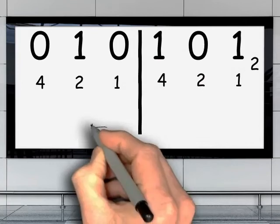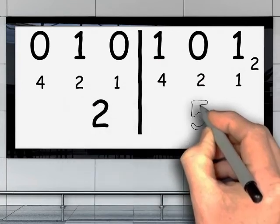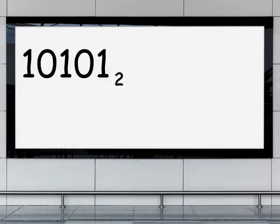The first group will give us 2, while the second group will give us 5 as the answer. 10101 binary is 25 octal.